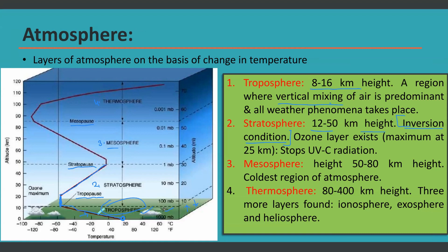The reason behind inversion in the stratosphere is the presence of the ozone layer, with maximum concentration at 25 km height — a commonly examined fact. The ozone layer is responsible for stopping UV-C radiation. UV is divided into three categories: UV-A, UV-B, and UV-C. The ozone completely stops UV-C radiation, very significantly stops UV-B radiation, and allows UV-A to pass through. UV-C is the most harmful UV radiation, while UV-A does not cause very significant harm to living organisms.